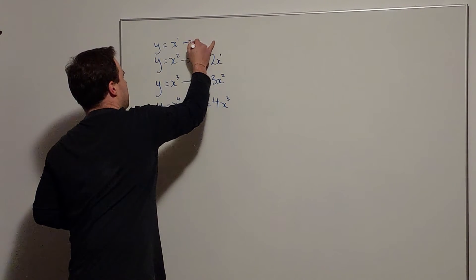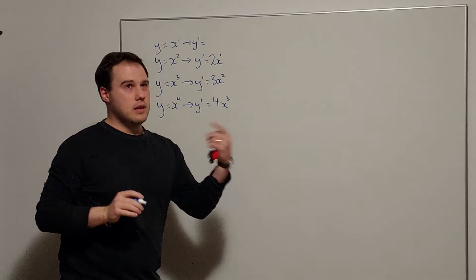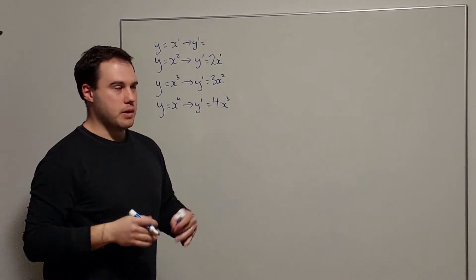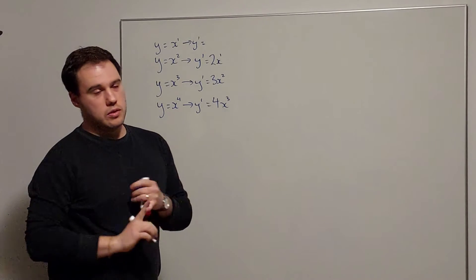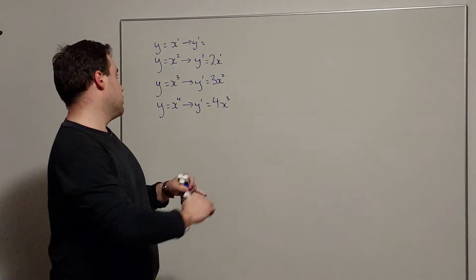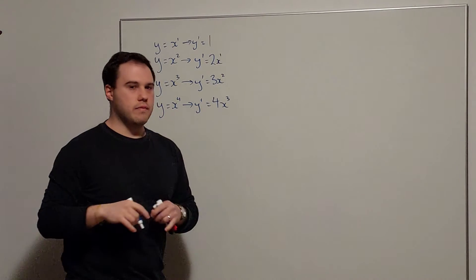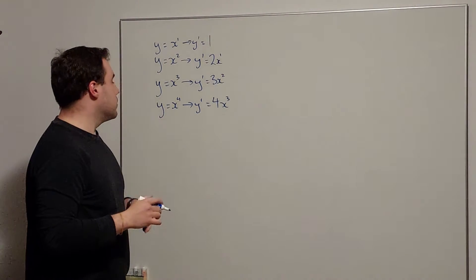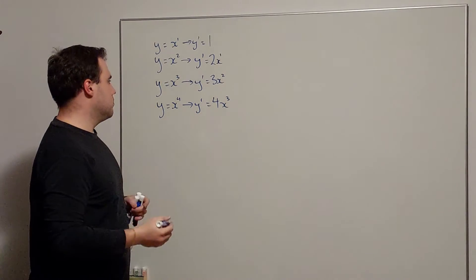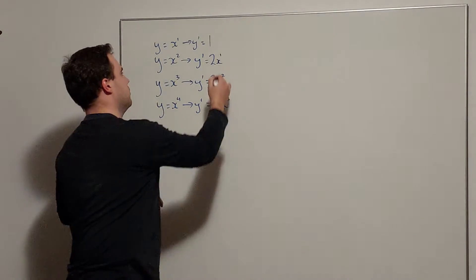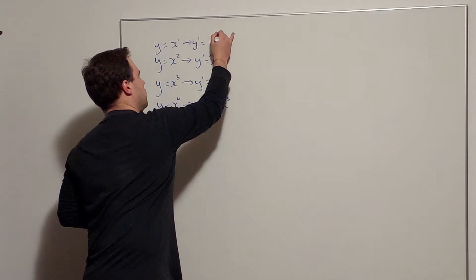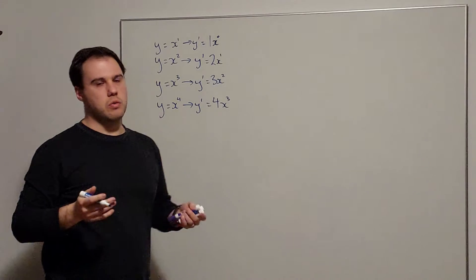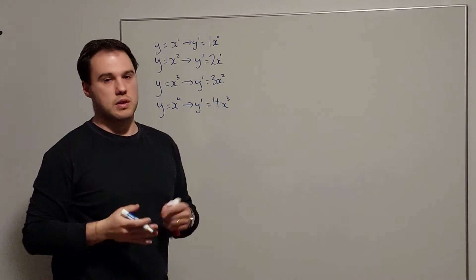What did x to the 1 differentiate to? Well, it's a linear function: y equals 1x plus 0 in the format mx plus c. The gradient will be 1 everywhere on that function because the gradient is constant. And just to help the pattern become visible, let's write that as 1 times x to the 0 — x to the 0 is just 1, so 1 times 1 is still 1.